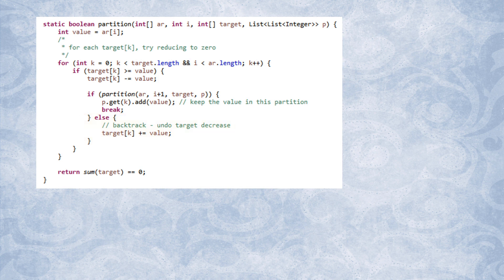This is a funny algorithm, because there's no explicit for loop to iterate over the values in the input array. Instead, the recursive step is what moves the array index forward. So when we call this function with i equals zero, we're essentially asking, is it possible to place the first value into the first partition?